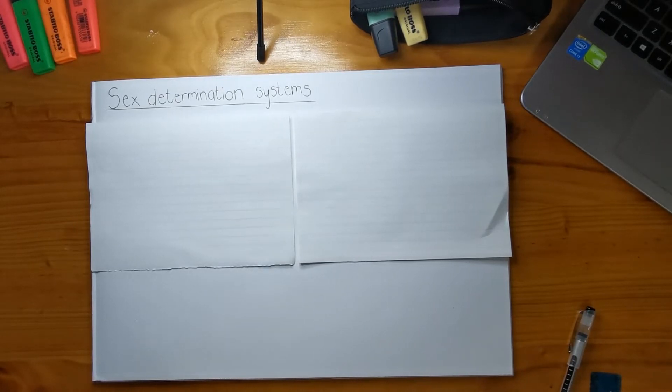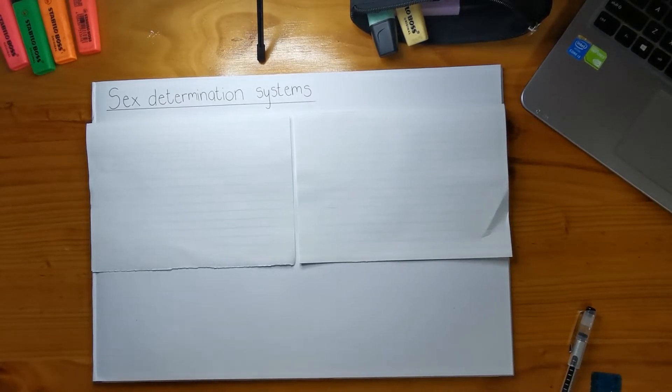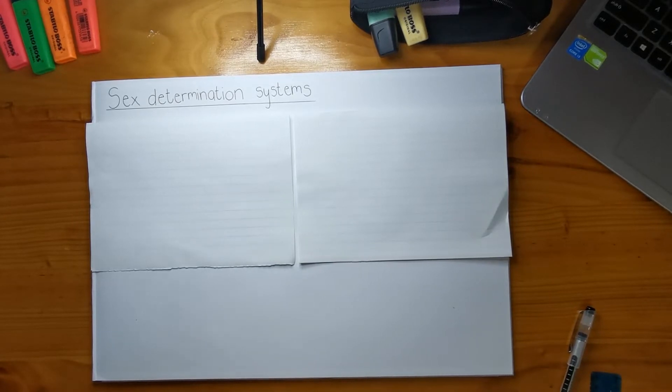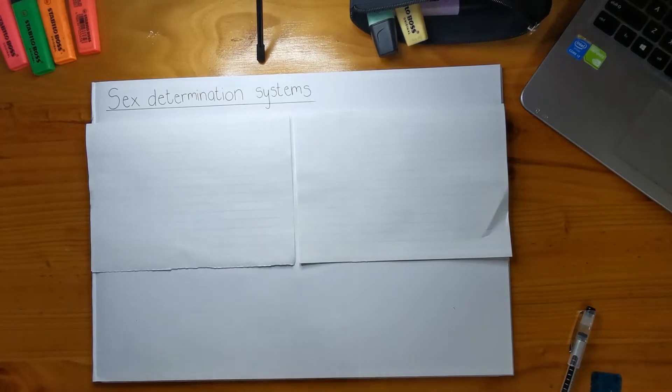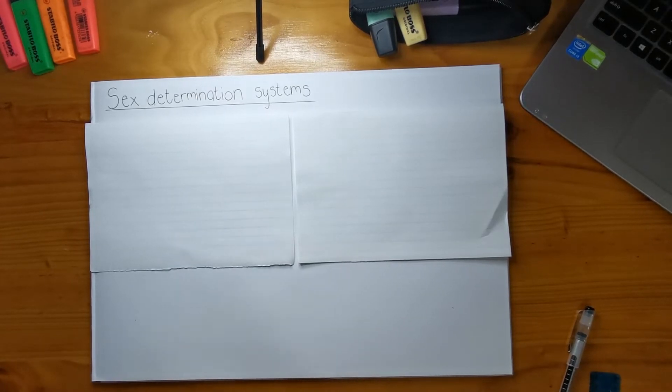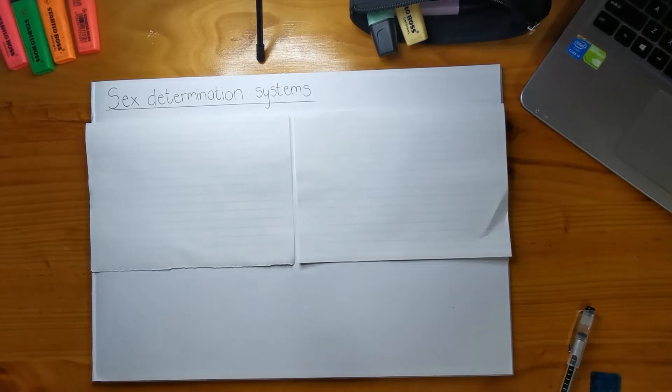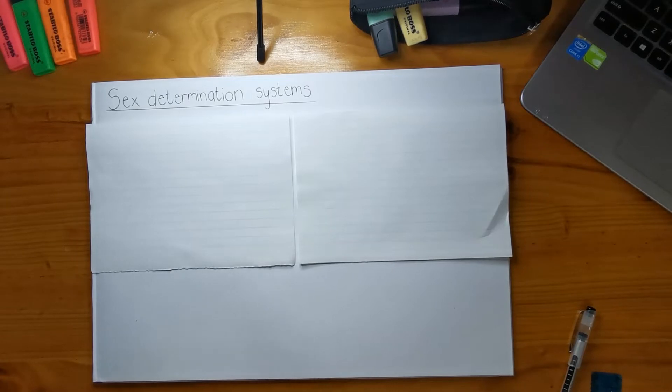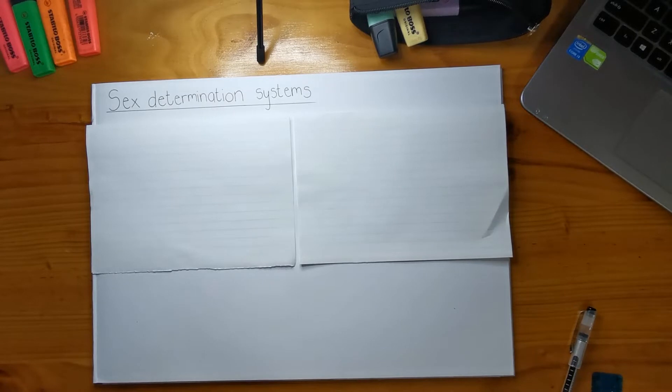Hopefully you have done that and you've given it a read. What they've given you in this question is that they have crossed two different types of moths. They've crossed a female that has dark wings and a male that has dark wings, and they've also told you about their progeny.